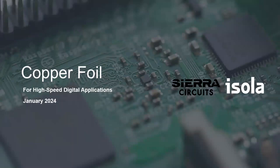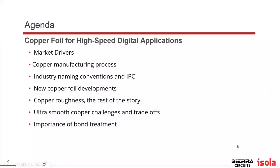The agenda today is going to cover the market drivers — why do we need these new types of copper foil? I'll go through the copper manufacturing process basics, look at the industry naming conventions and some of the issues that IPC is starting to address with these new copper foils, new copper foil developments, where the market is going with those types of copper foils, and copper roughness — basically the rest of the story.